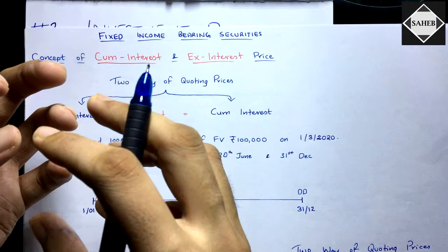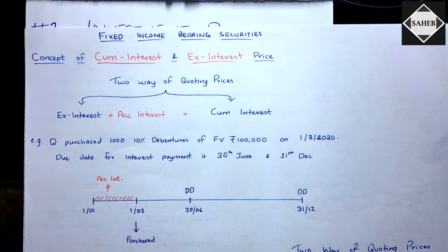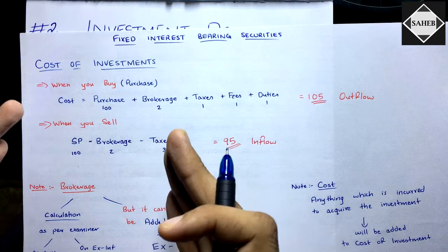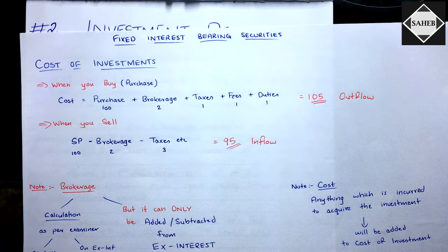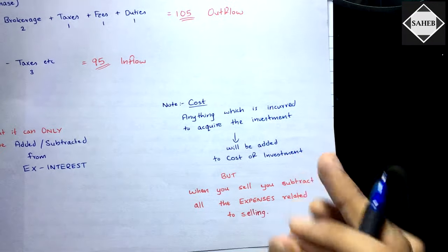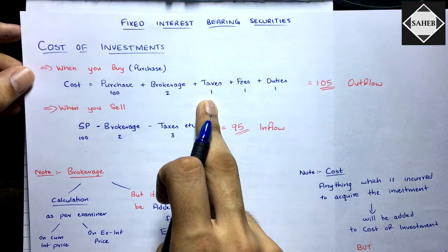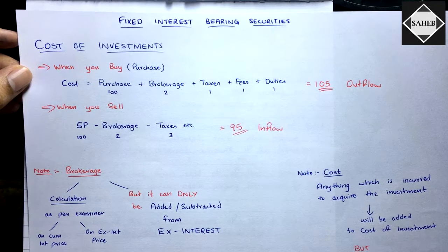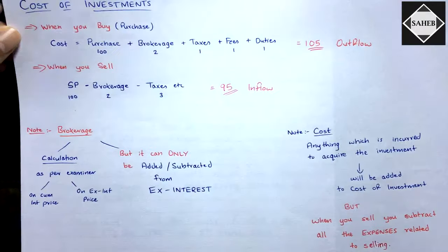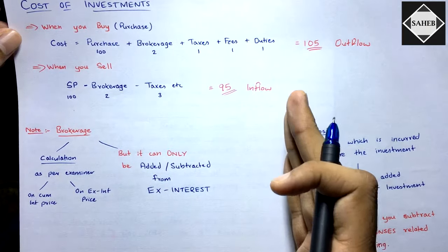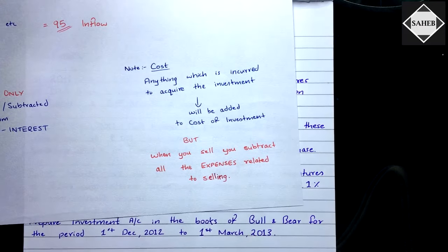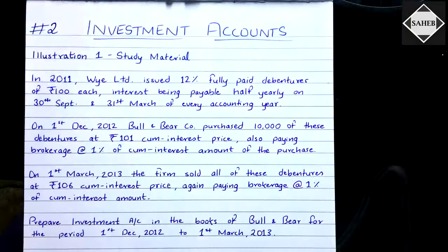We also understood the concept of cum-interest and ex-interest price. Cum-interest and ex-interest are just two ways of quoting prices. Ex-interest means the cost of the investment only, and if you include the accrued interest in that, you get cum-interest.